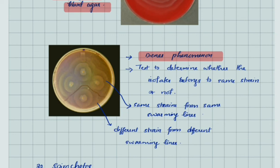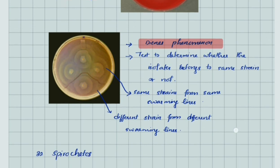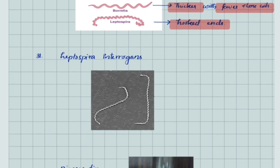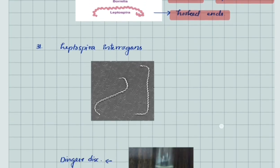There are three different species under spirochetes: Treponema, Borrelia, and Leptospira. Treponema forms slender with tight coils, Borrelia is very thick with fewer and loose coils, and Leptospira has hooked ends. This image shows Leptospira interrogans.